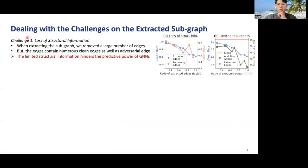However, we faced some challenges when extracting the subgraph. When extracting the subgraph, we remove a large number of edges, but the removed edges contain numerous clean edges as well as adversarial edges, which results in limited structural information and degradation of the predictive power of GNN.